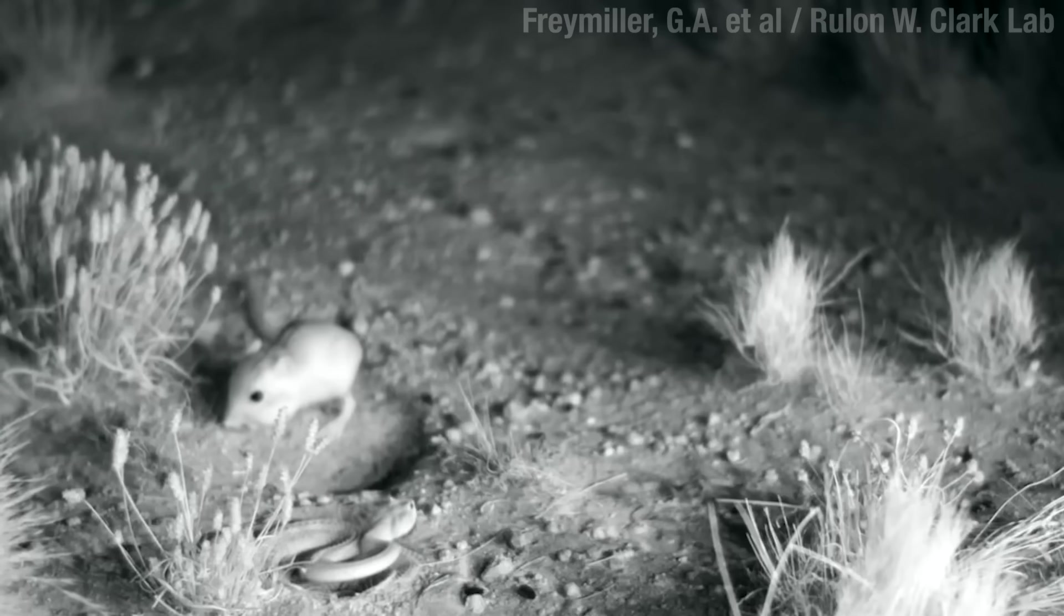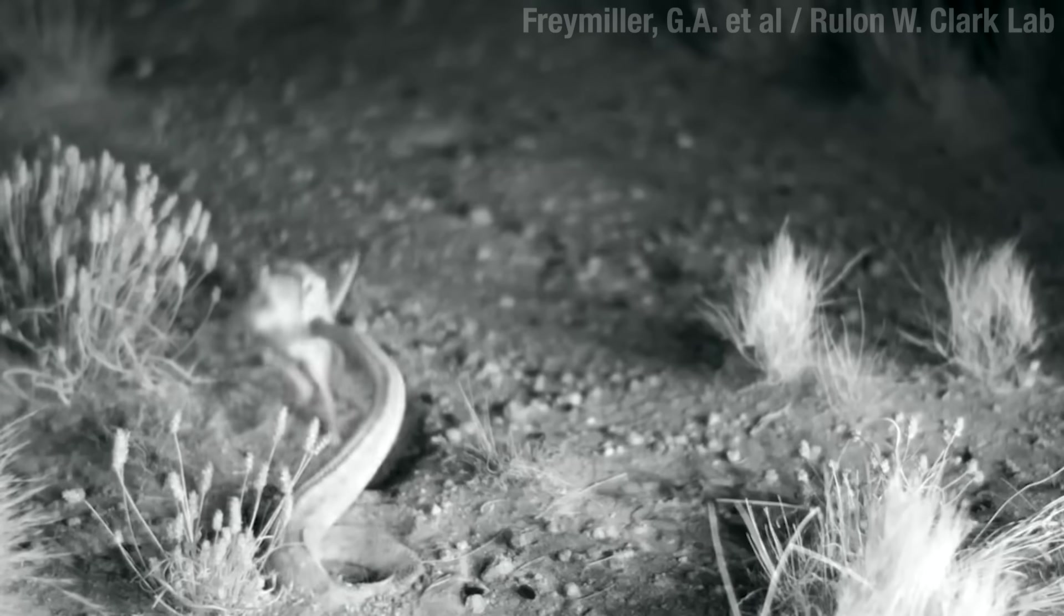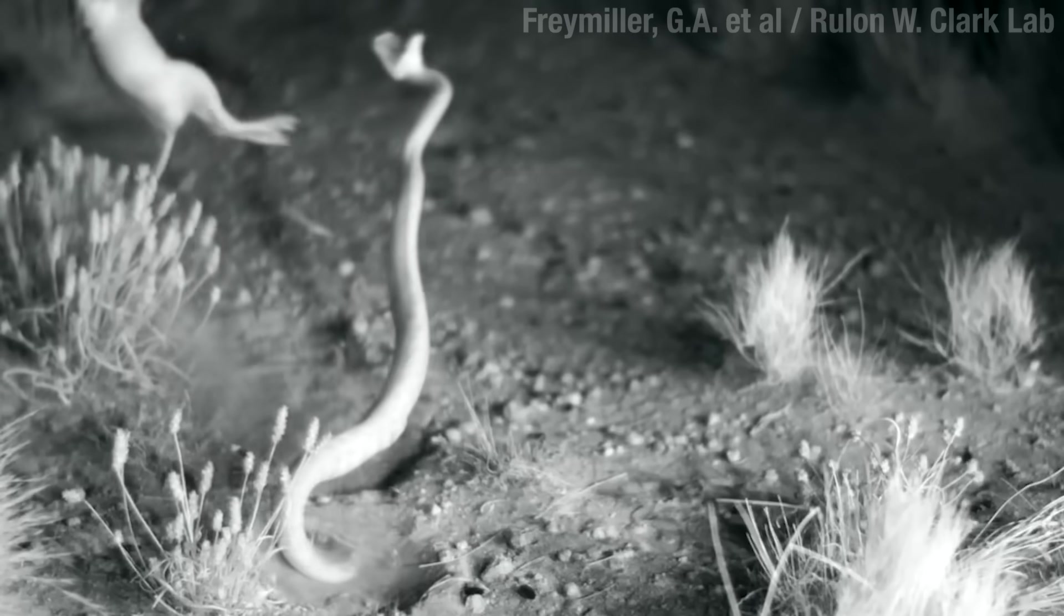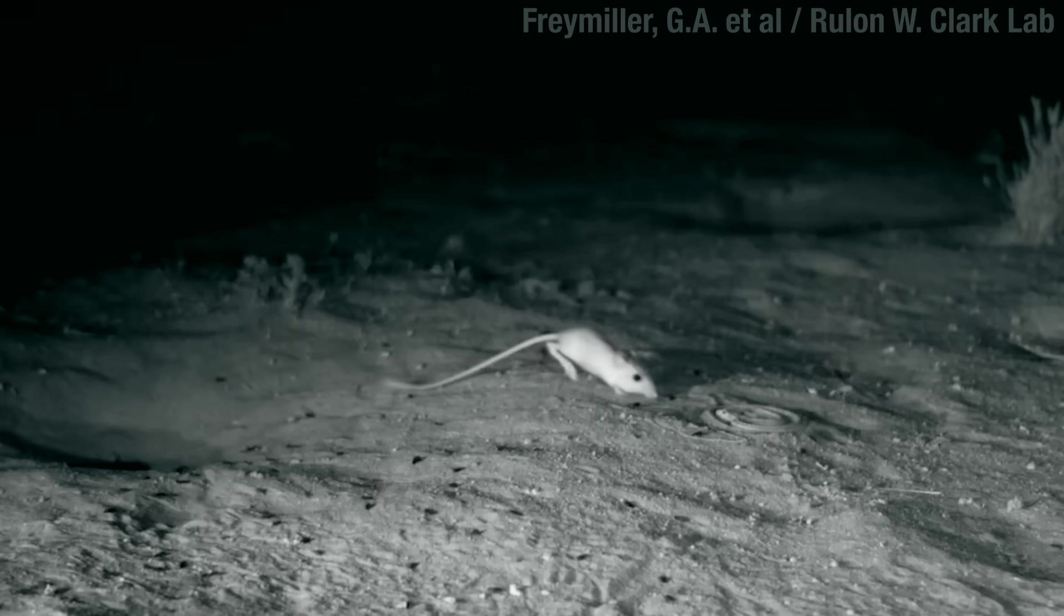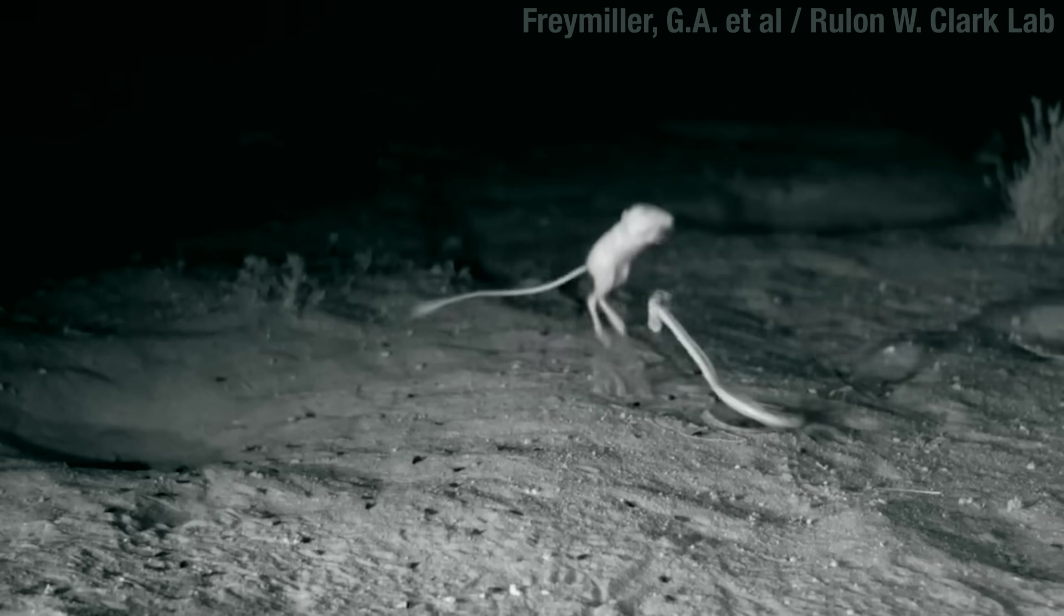However, there are some animals that do have the reflexes to match. The kangaroo rat, for example, is a legitimate badass. Rattlesnake strikes are just part of the commute. All they need is a split-second edge, and maybe to guess right like a goalie.